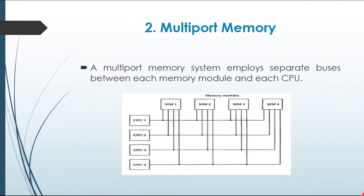What happens in multi-port memory? In a multi-port memory system, separate buses between each memory module and each CPU are applied. Your memory modules are denoted by memory modules and CPUs. These are separate buses. The buses are attached to each memory module, and these 4 CPUs are attached to each memory module. This is called a multi-port system — you can use separate buses for each memory module and for each CPU.